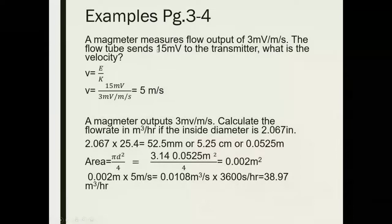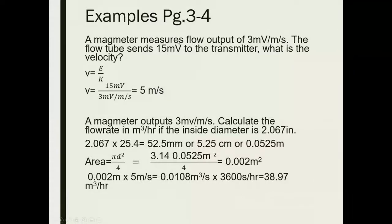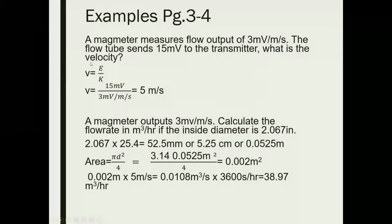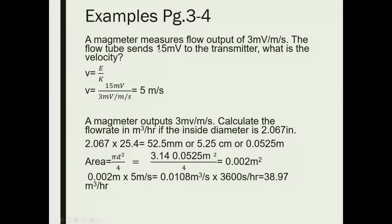Here's a sample problem. A mag meter measures a flow output of 3 millivolts per meter per second. The flow tube sends 15 millivolts to the transmitter. What is the velocity? Taking the formula from the previous slide: velocity equals EMF divided by K factor. So 15 divided by 3 gives us a velocity of 5 meters per second. Nothing too crazy there.